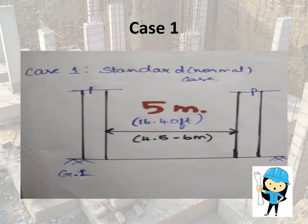First case, this is the normal case or the standard case in which we are using in the residential building and the normal building. This is not a light load structure or the heavy loaded structure. Normally we use 5 meter, that is the distance between the two columns is 5 meter here. It ranges from 4.5 to 6 meter, but in standard we are using as 5 meter. In feet, it is 16.40 feet.